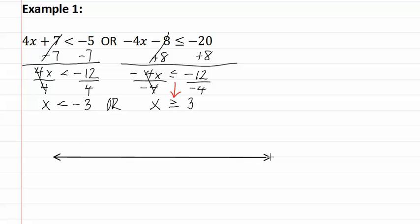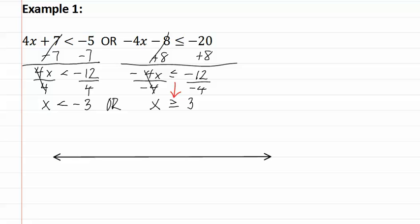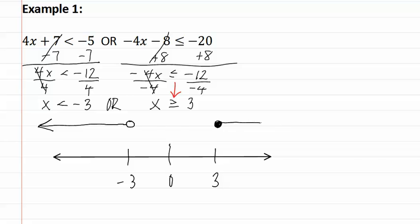Let's graph this. First, we do a quick sketch above the graph, putting numbers on the graph: zero, three, and negative three, so that all numbers from our inequality are included. The first one says x is less than negative three, so we put an open circle above negative three and make it go to the left. The second statement says greater than or equal to three, so we fill in a dot and go to the right.